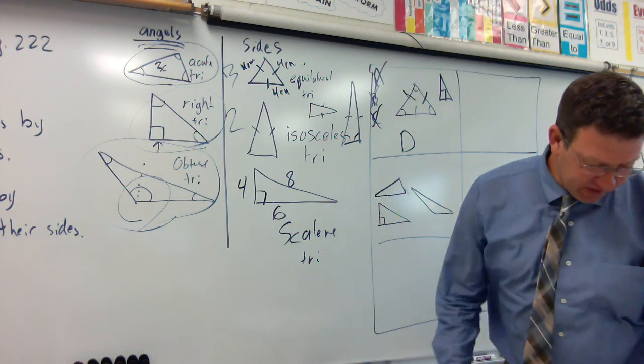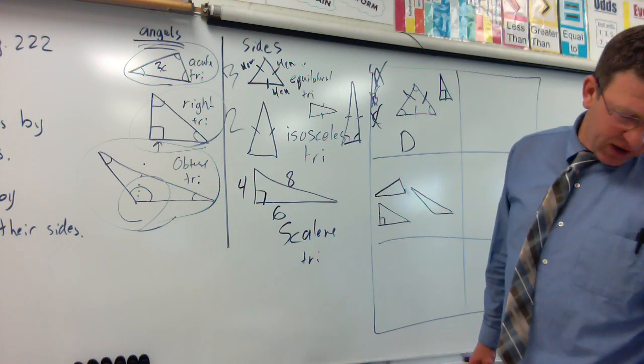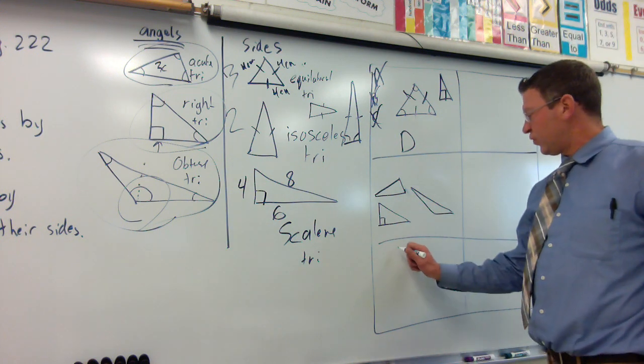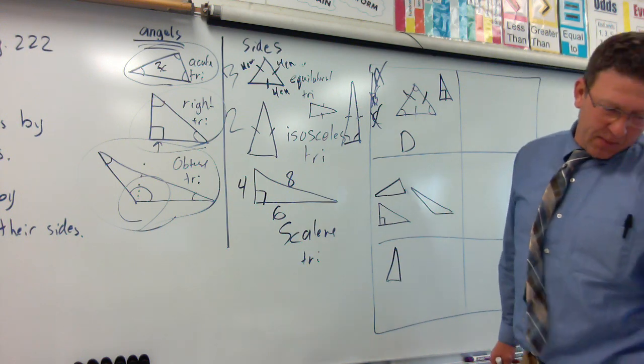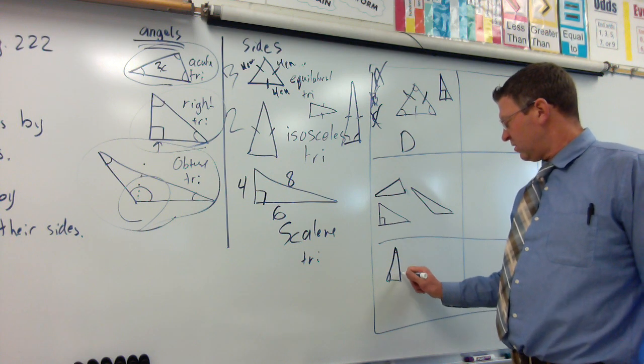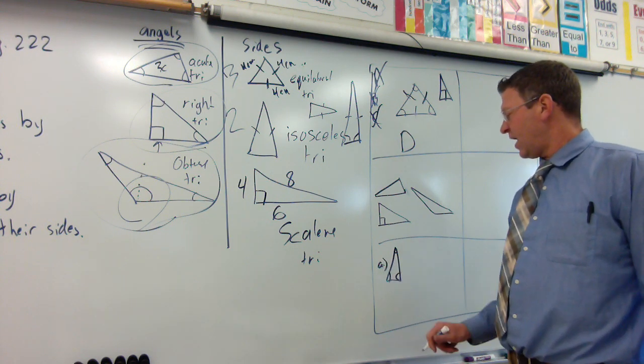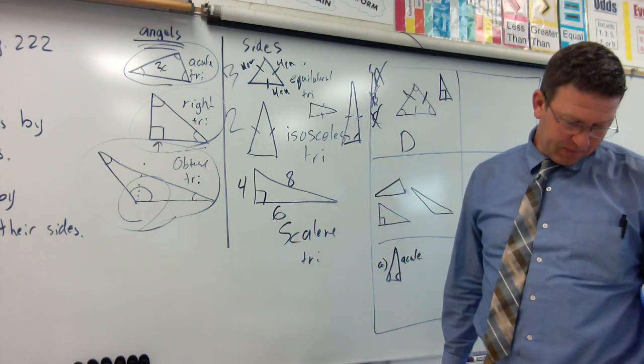All right. Good work. Jump down to the lesson practice there. It says classify each triangle by its angle. The first one, to me, looks tall and skinny, but we're doing it by angle. So, acute angle, acute angle, acute angle. So, A would be an acute triangle.